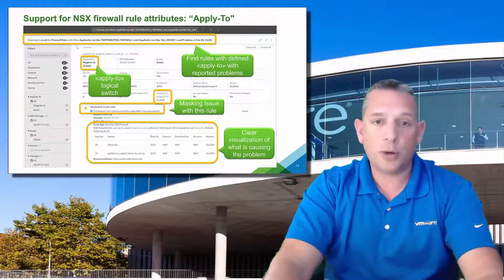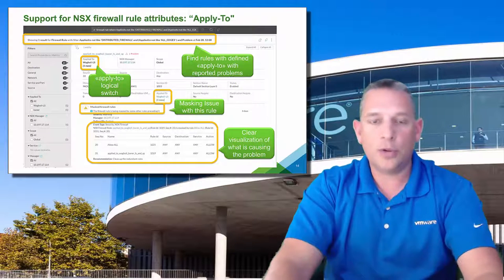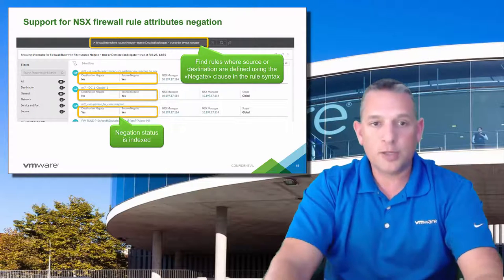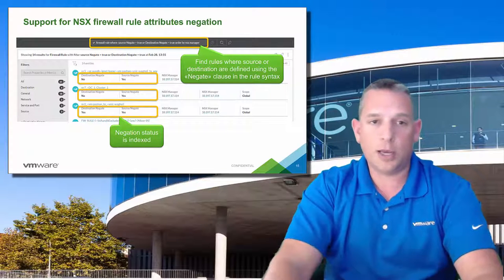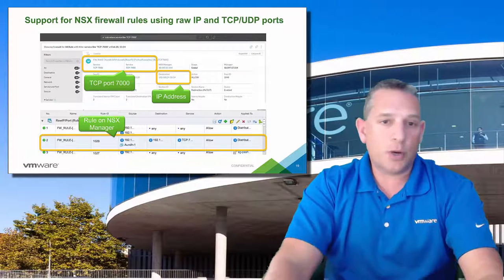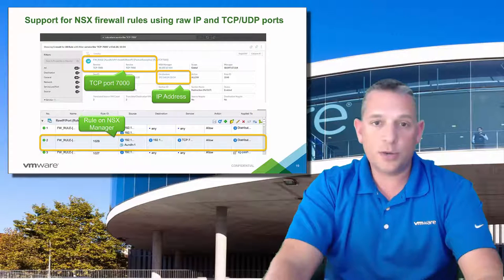Here's an example where we're doing a query using the apply-to attribute, using it to easily find a problem. You can also do queries based on the negation attribute, meaning looking for anything that does not meet the attribute you're querying on — the opposite of what you're querying. This example shows doing a query using raw IPs and TCP/UDP port numbers. There are many different ways you can perform queries.